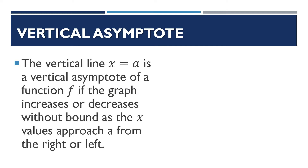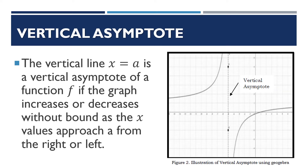Let's have first the vertical asymptote. The vertical line x is equal to a is a vertical asymptote of a function f if the graph increases or decreases without bound as the x values approach a from the right or left. This is the graph of the vertical asymptote. The line in red is the vertical asymptote — the line where the graph gets closer and closer but does not touch.